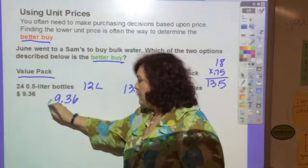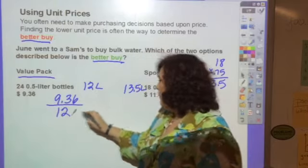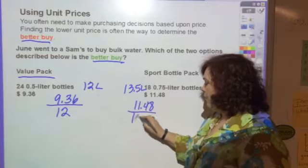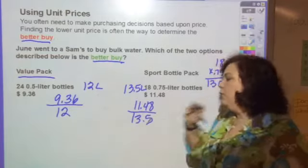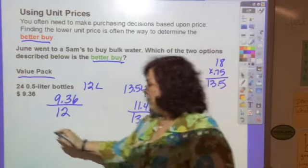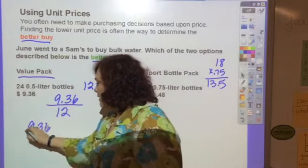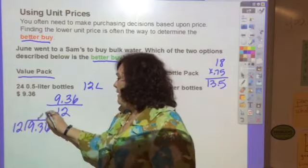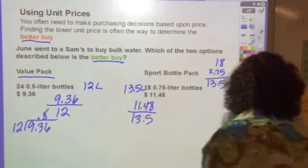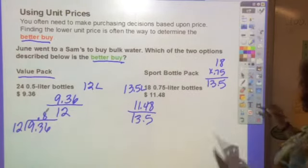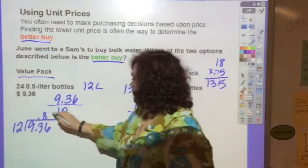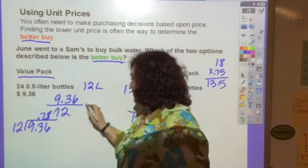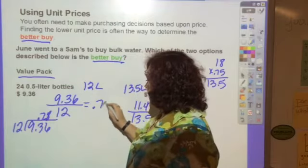So $9.36 is the amount over 12, and $11.48 is the amount over 13.5. You would divide, and this would look like 9.36 divided by 12. If you divide it all out, it's not 80—it'd be 78 cents. So this equals $0.78 per liter.